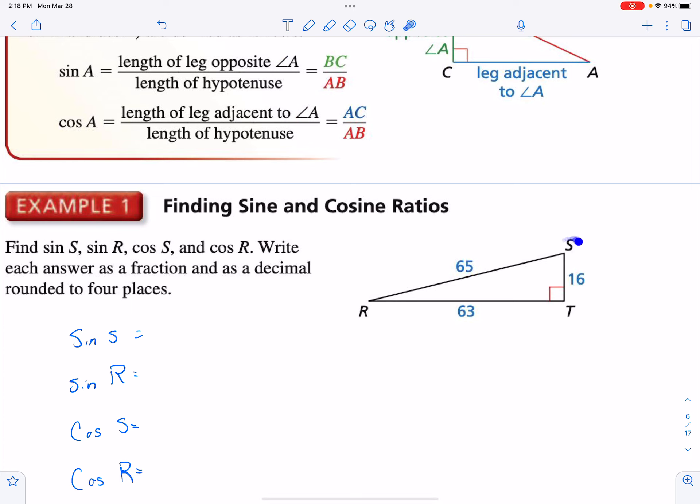The sine of my other acute angle R, opposite of 16 over hypotenuse is still 65. Now cosine is adjacent over hypotenuse. So if I go to cosine of S, adjacent is 16, hypotenuse is 65. So I have 16 over 65, and then adjacent to R is 63 over 65. Now if I look at my fraction values here, we should notice that the sine of the angle is going to be equal to the cosine of the other angle. The sine of R is equal to the cosine of S, and that applies all the time.